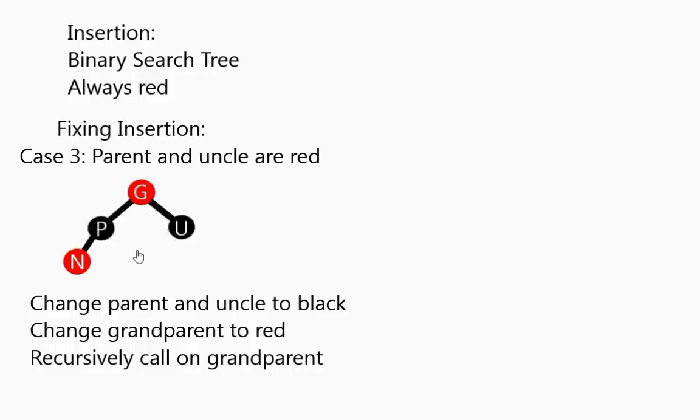Now this might have messed things up for the grandparent, so we actually call, starting with case 1 again, a recursive call on the grandparent. So we basically run through the cases again on the grandparent, which might recursively call its grandparent, by the way. This is a recoloring to help fix the number of reds versus blacks on the tree.